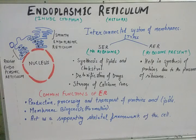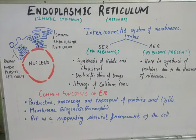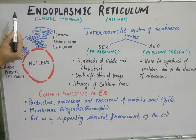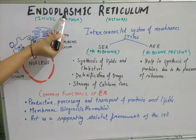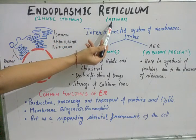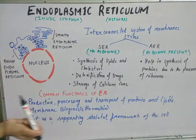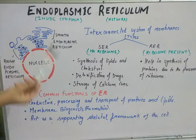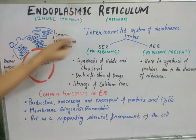Let's start our new topic: endoplasmic reticulum. This is the first organelle we are going to study today. Organelles are visible mainly in eukaryotic cells when observed under the electron microscope. 'Endo' means inside, 'plasma' refers to the cytoplasm. So inside the cytoplasm there is a network of membrane-bound tube-like structures — an interconnected system of membranes — that is the endoplasmic reticulum.